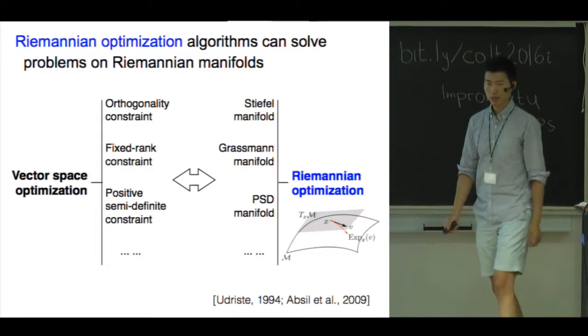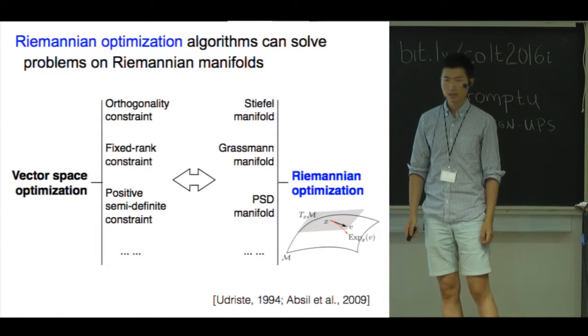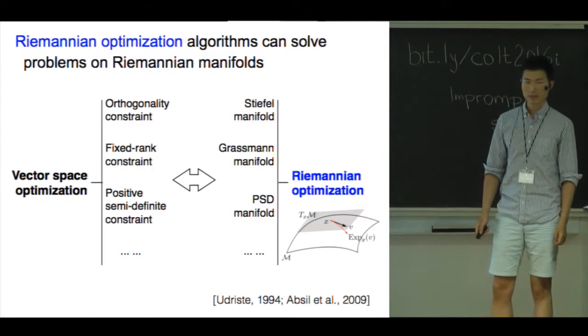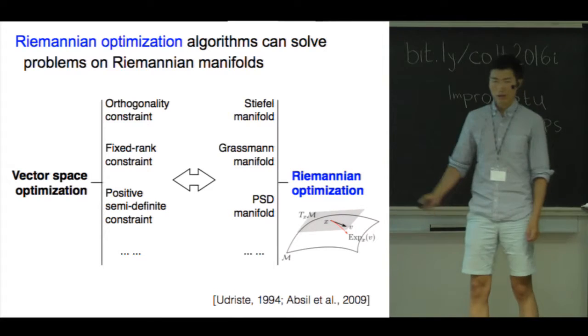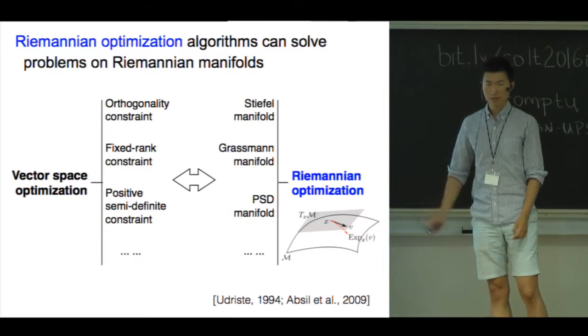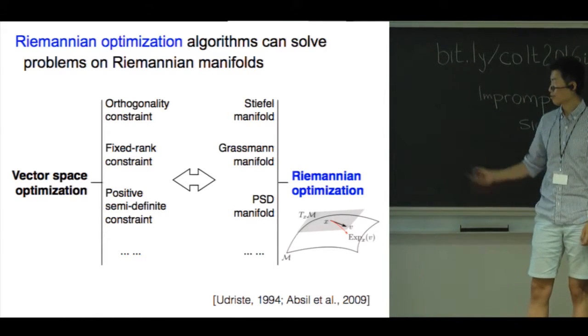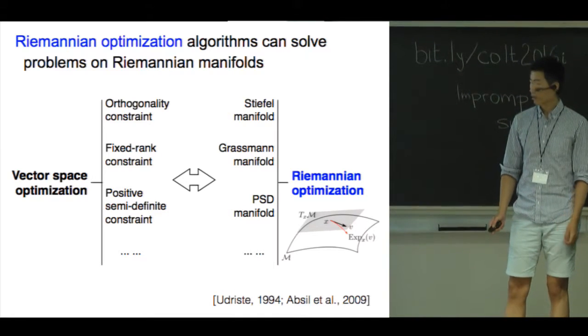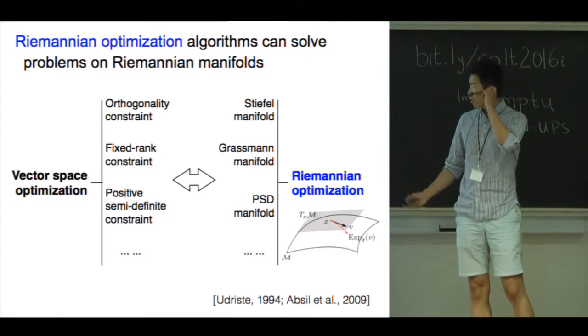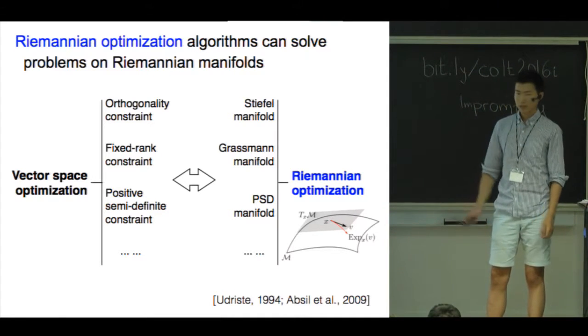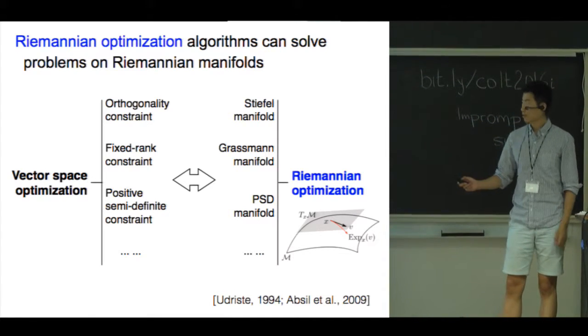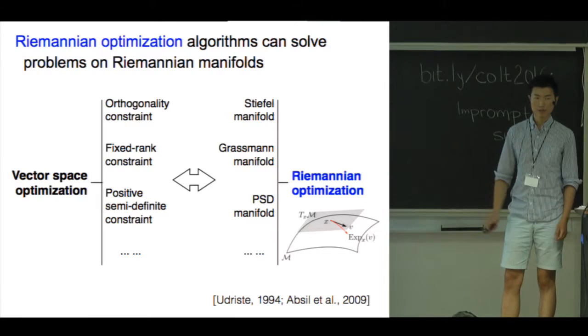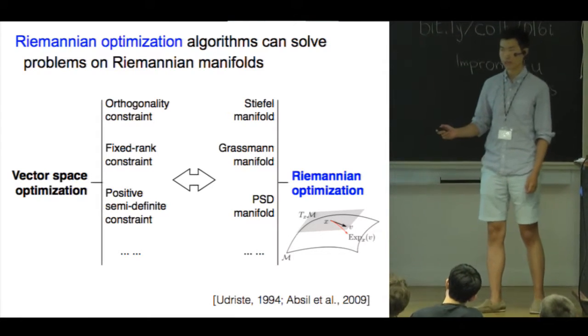In data science and machine learning, optimization problems with structured nonlinear constraints appear in many scenarios. Remarkably, they can often be viewed as unconstrained optimization on Riemannian manifolds.